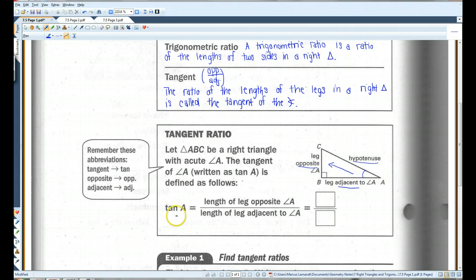And the other adjacent side is going to be called the adjacent side. So tangent, if you're referring to the tangent of A, it's going to be the opposite side over the adjacent side. So in this case, BC over AC. I'm sorry, AB.